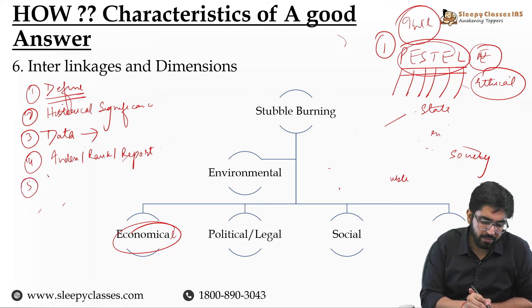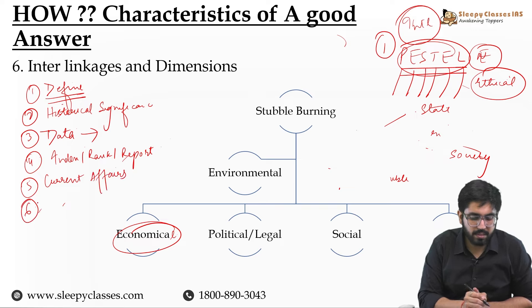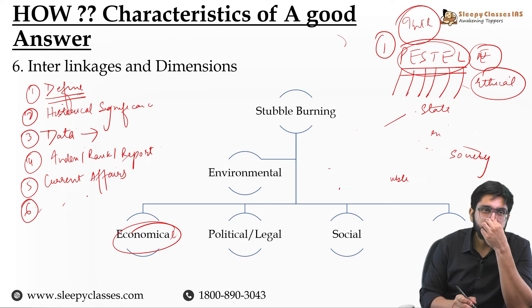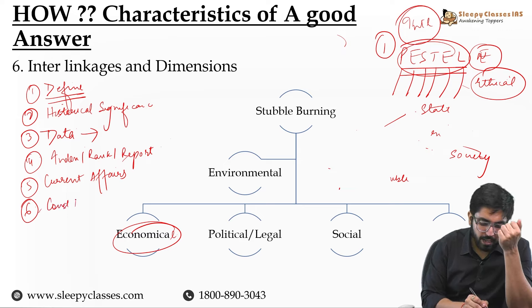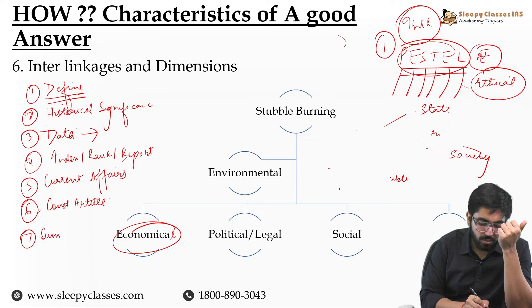Number 5: Give any current affairs reference related to that topic. Number 6: Give the constitutional article related to that topic. Number 7: Summarize what you are going to write, or summarize the question.